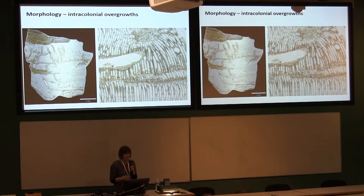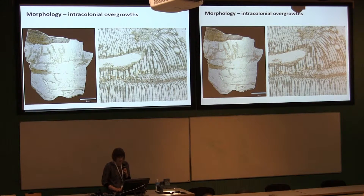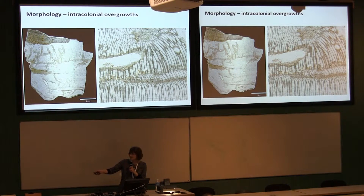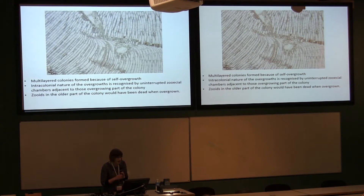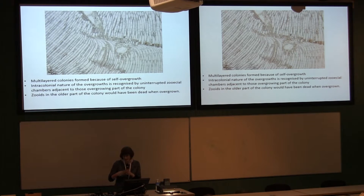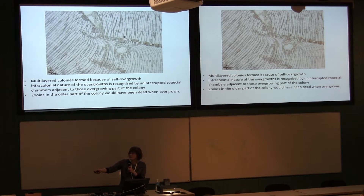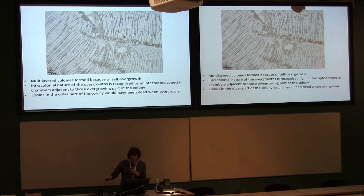The actual colonies are grown by intercolonial overgrowths. When you look at them, you can see layers growing into them — these are layers of the bryozoan, but they're actually all one colony; it's the colony overgrowing itself. They're formed by overgrowth, and you can see they're intercolonial because here the long colonies are uninterrupted, but here the colony begins to overgrow itself in this part and again in this portion.